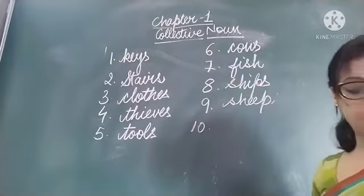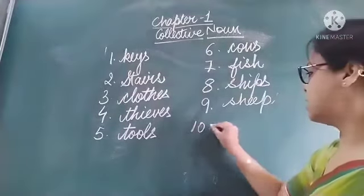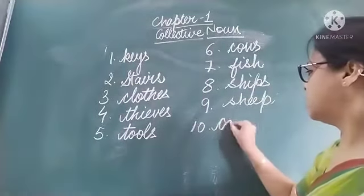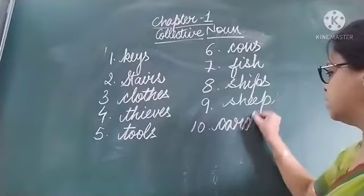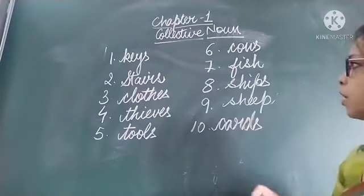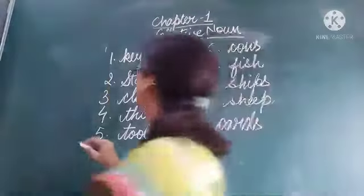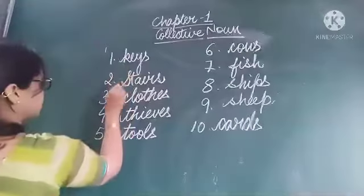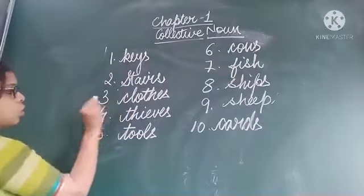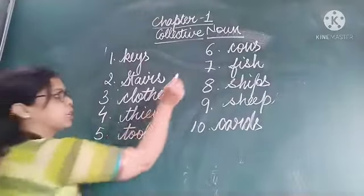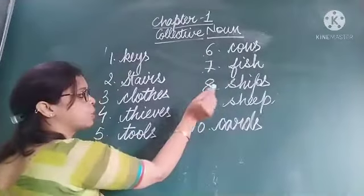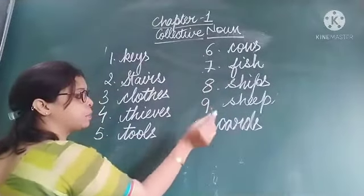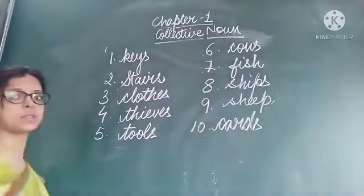A pack of cards. So the answers are: keys, clothes, thieves, tools, cows, fish, ships, sheep, cards.